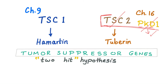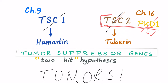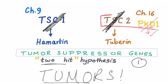The two proteins, hamartin and tuberin, are defective and deficient in tuberous sclerosis. These are tumor suppressor proteins encoded by tumor suppressor genes. With defective tumor suppressor genes, you get tumors. There is also the two-hit hypothesis: the first hit is the autosomal dominant genetic mutation, and the second hit is another random mutation required for the disease to fully express — which explains variable expressivity.